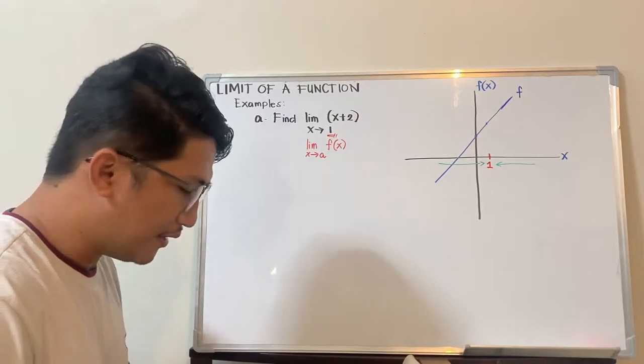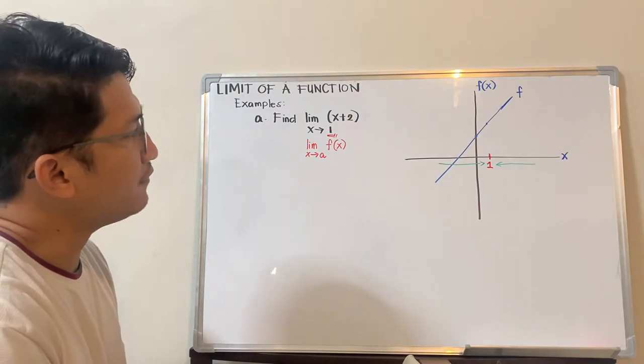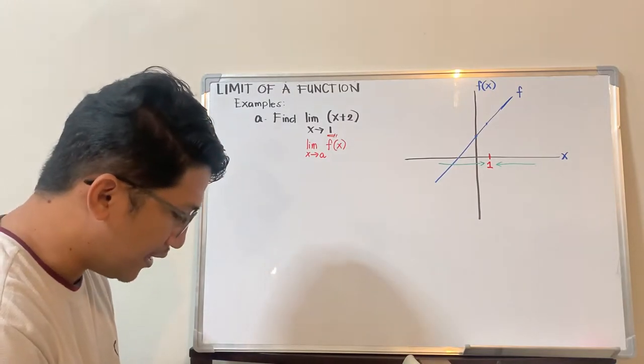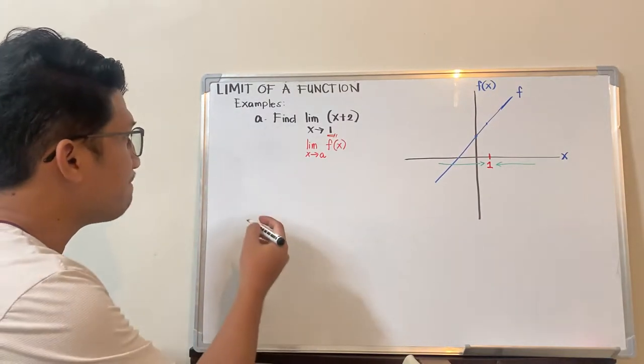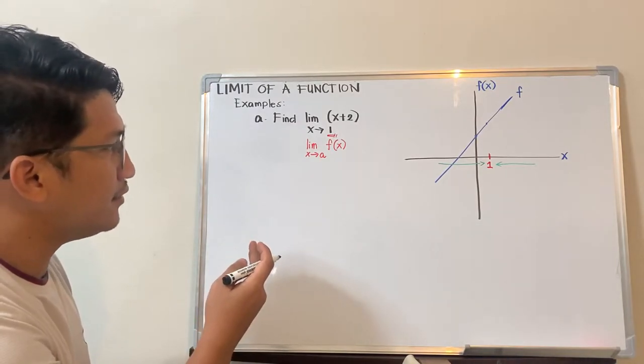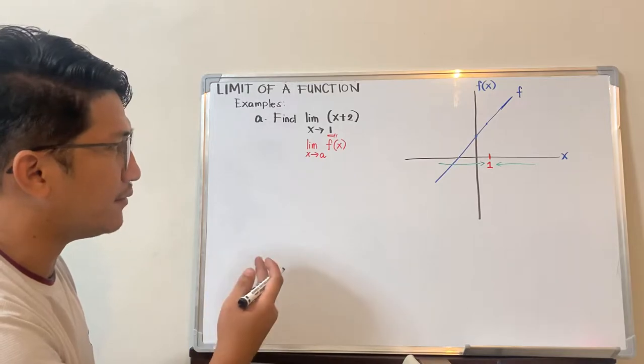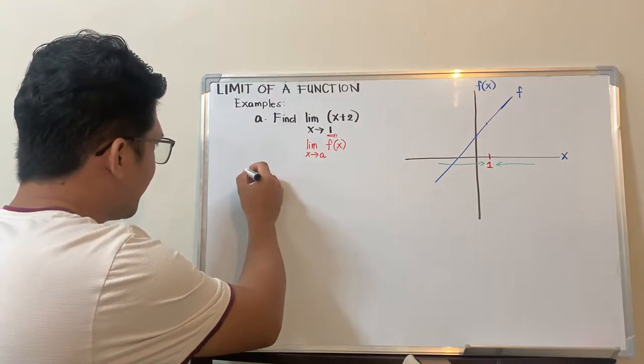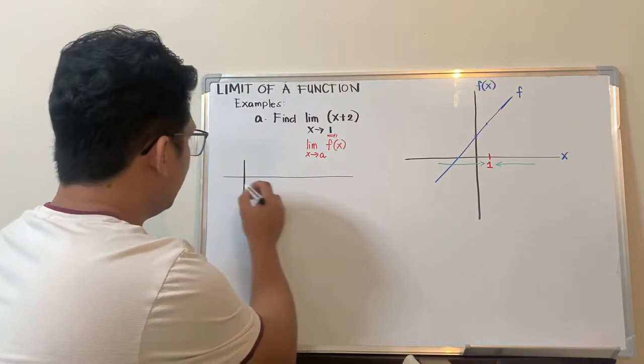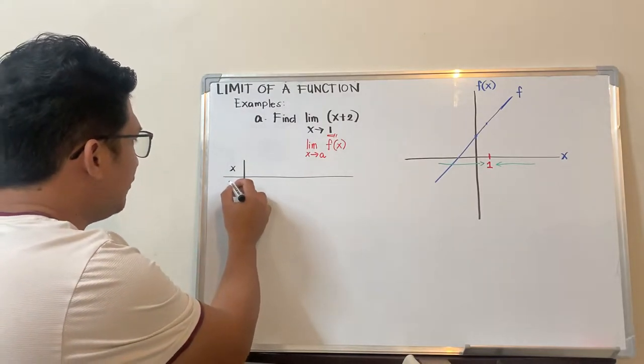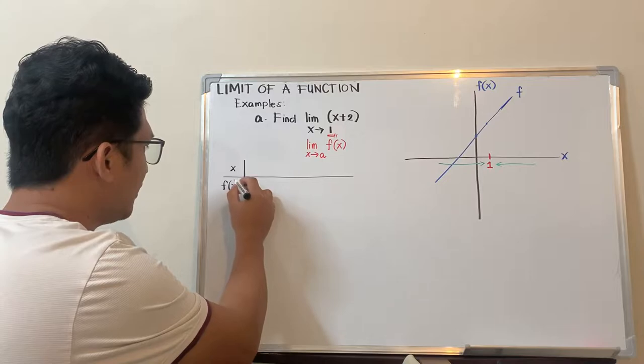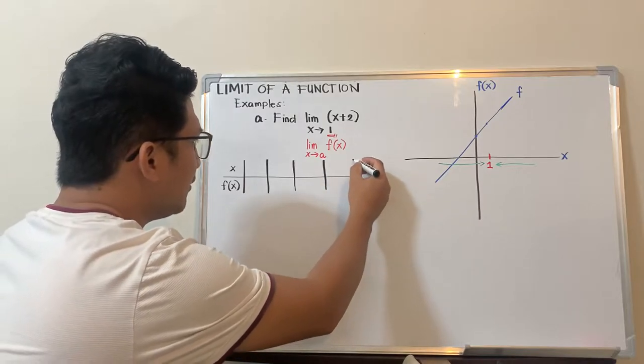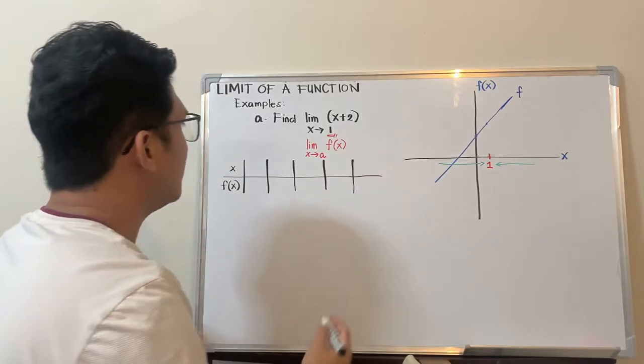But actually, this method can get tricky, guys, especially if decimals or fractions are involved. So what we do is we make a table. We'll make a table. First we evaluate the limit of the function from the left, and then after that also from the right, and we will try to compare.